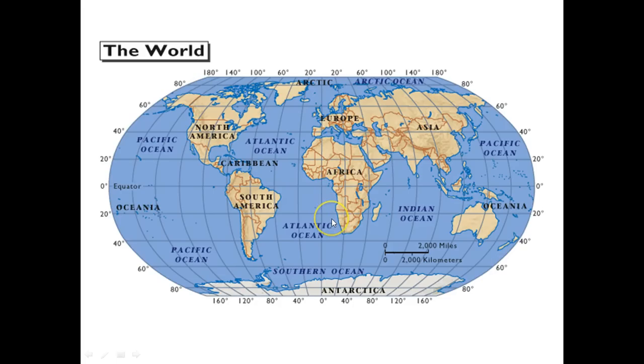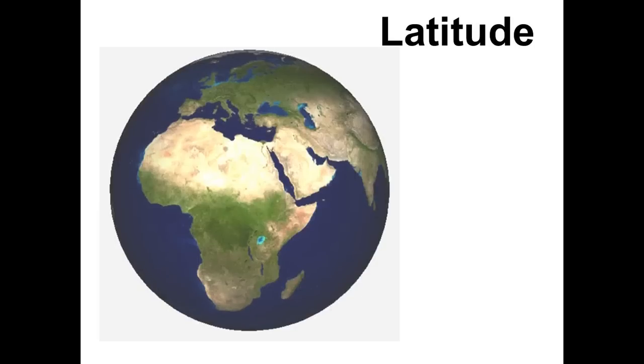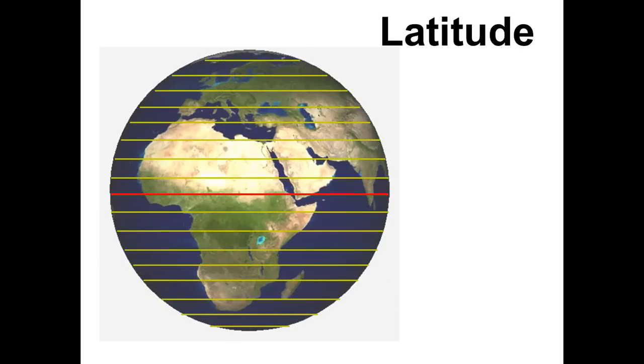We use numbers and degree points to label the individual lines to help us find exactly where we're talking about. Let's look at how that works. First of all, you're going to need to know latitude. Latitude, the lines that run flat along the Earth just like this, between the North and the South Pole.